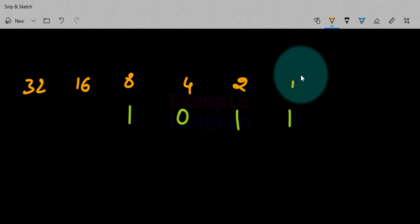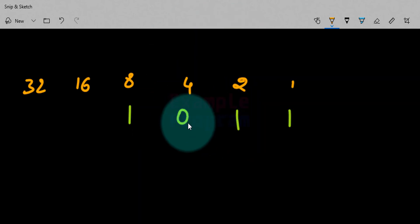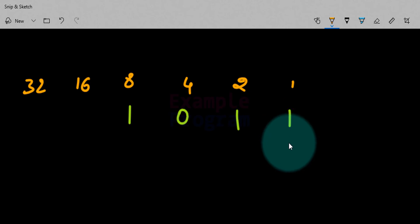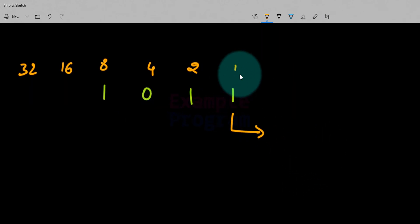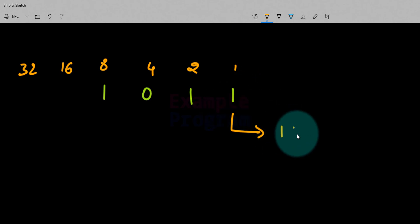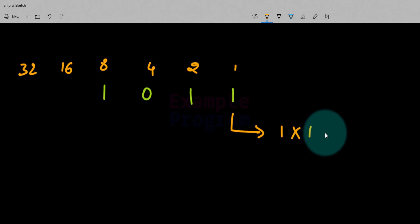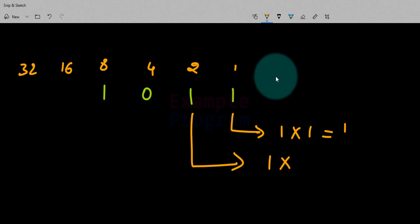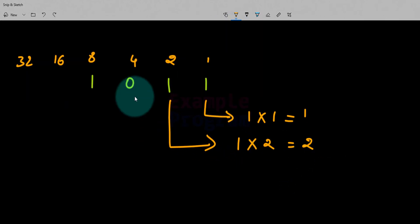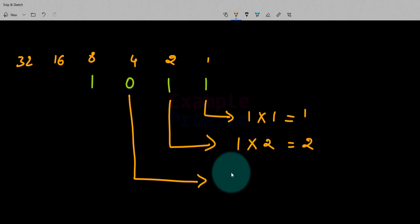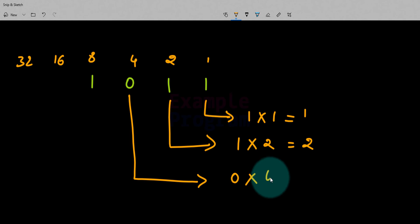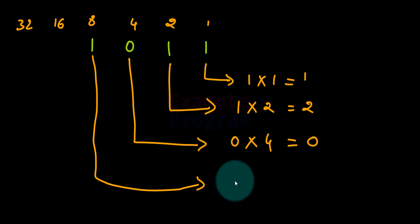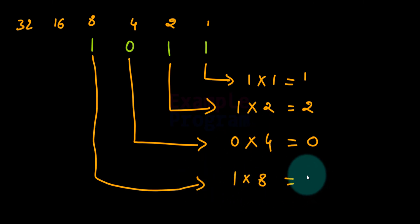Now we will see how we can convert the number from binary number system to decimal number system. What we do is take each digit and multiply that value with its weight. In this case the rightmost digit is 1 and the weight is 1, so the result is 1. Then we go to the next digit: the digit is 1 and the weight is 2, so we get 2. Then the next digit is 0 and the weight is 4, so it will be 0. Then the next digit is 1 and the weight is 8, so we get 8.